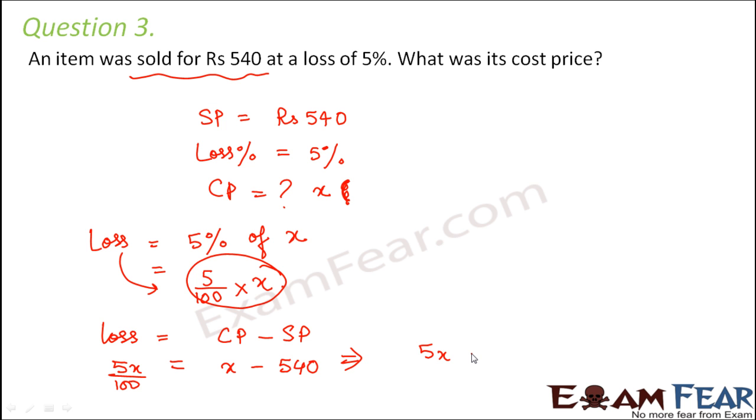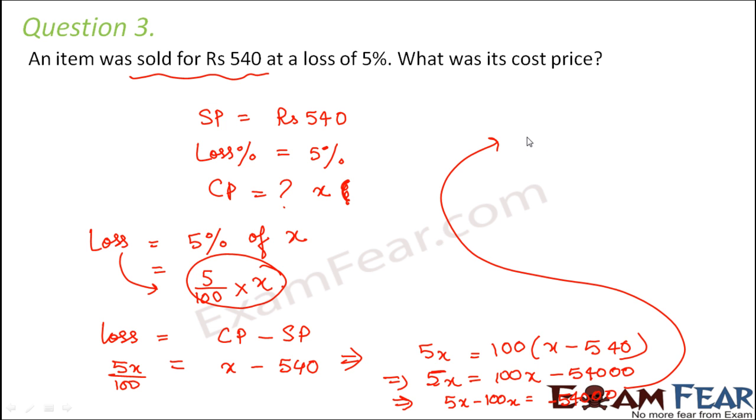So this becomes 5X is equal to 100 into X minus 540. So that is how we solve an equation, right? Cross multiply. So this can be written as 5X is equal to 100X minus 54,000. Or we can say that 5X minus 100X is equal to minus 54,000. So 5X minus 100X would be minus 95X is equal to minus 54,000.